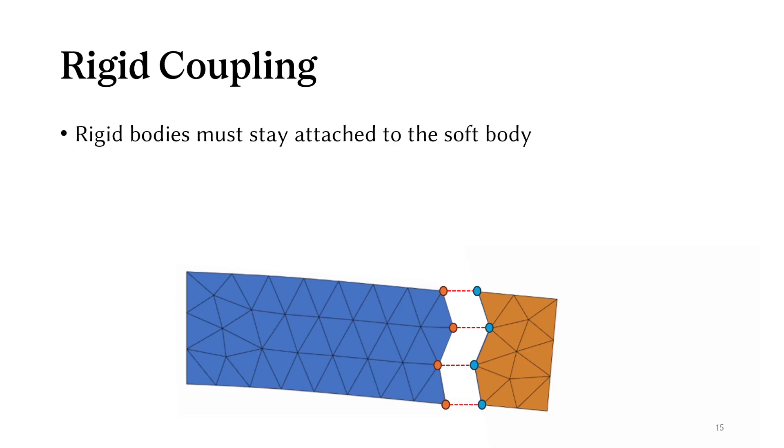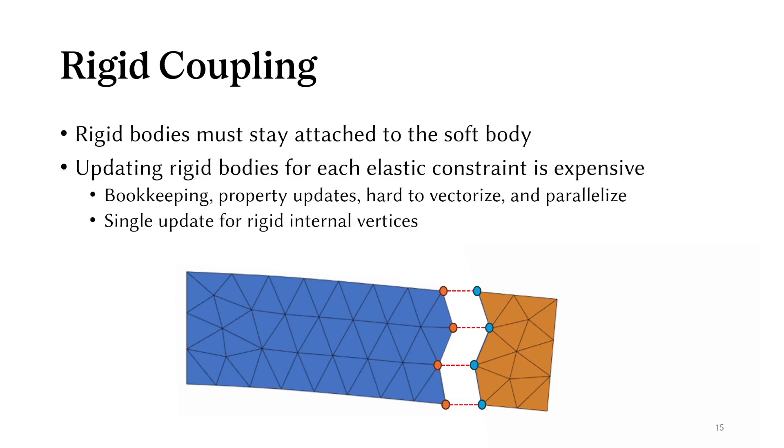While there's no deformation within rigid bodies, they still need to remain attached to the rest of the soft body. We could modify the elastic constraints to handle the rigid body updates directly, but it can be expensive due to bookkeeping and makes things harder to parallelize. We preferably want to only update internal rigidified vertices once per layer.